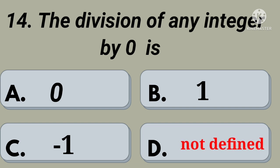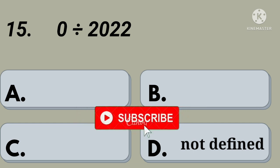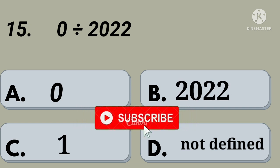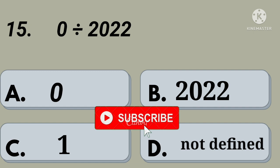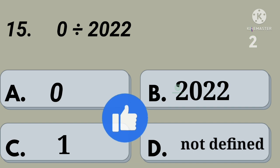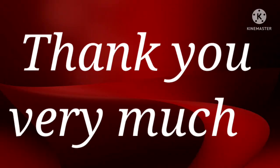Fifteenth question: zero by 2020 is. Option A: 0, option B: 2022, option C: 1, option D: not defined. Your time starts now. Right, option A: 0. Thank you very much.